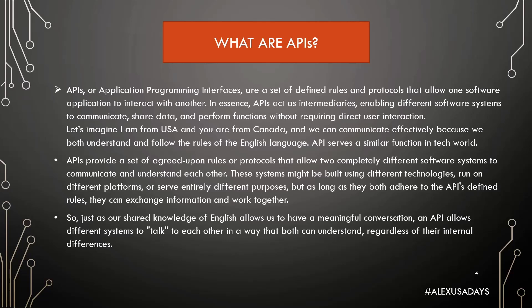Now, what are APIs? APIs, or Application Programming Interfaces, are a set of defined rules and protocols that allow one software application to interact with another. In essence, APIs act as intermediaries, enabling different software systems to communicate, share data, and perform functions without requiring direct user interaction.